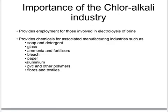Companies such as these are big employers in the Cheshire area, not only for the electrolysis of brine but also for the other ancillary industries based upon the products of electrolysis, such as the manufacture of soap, detergent, glass, ammonia, bleach, paper, aluminium, PVC, and various other fibres and textiles — all based around the products of electrolysis of salt.